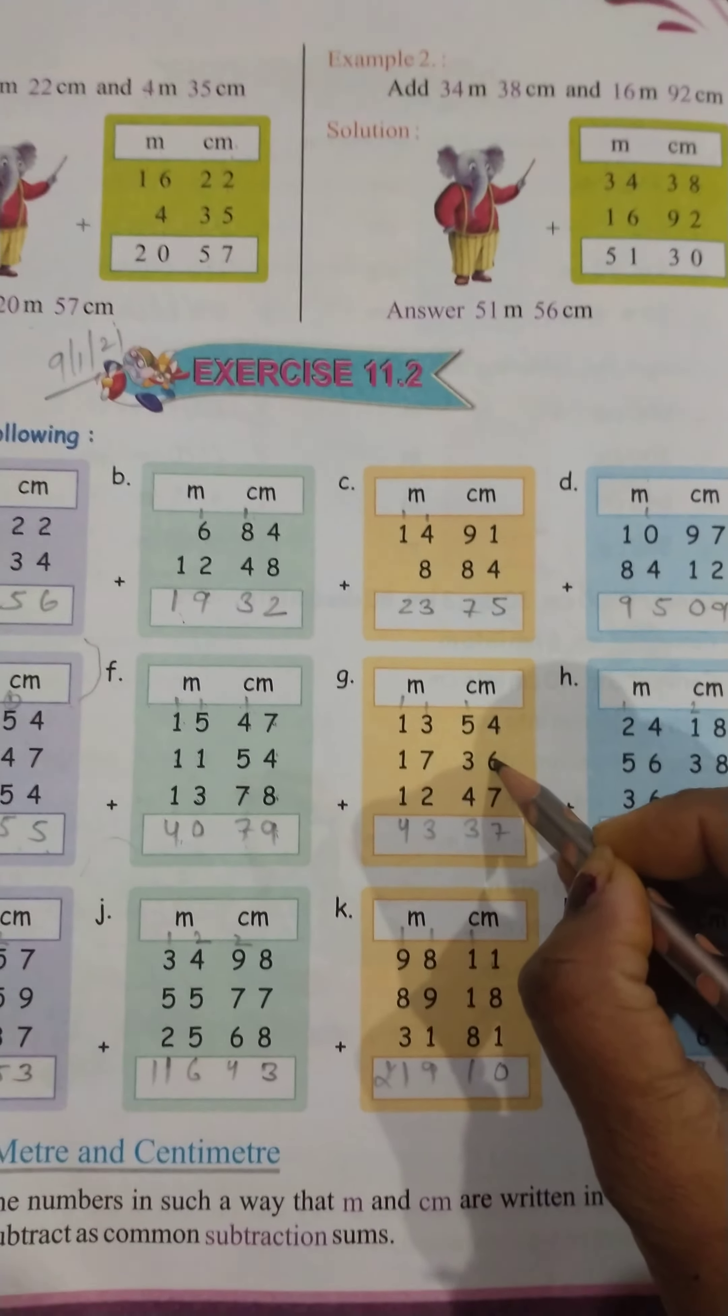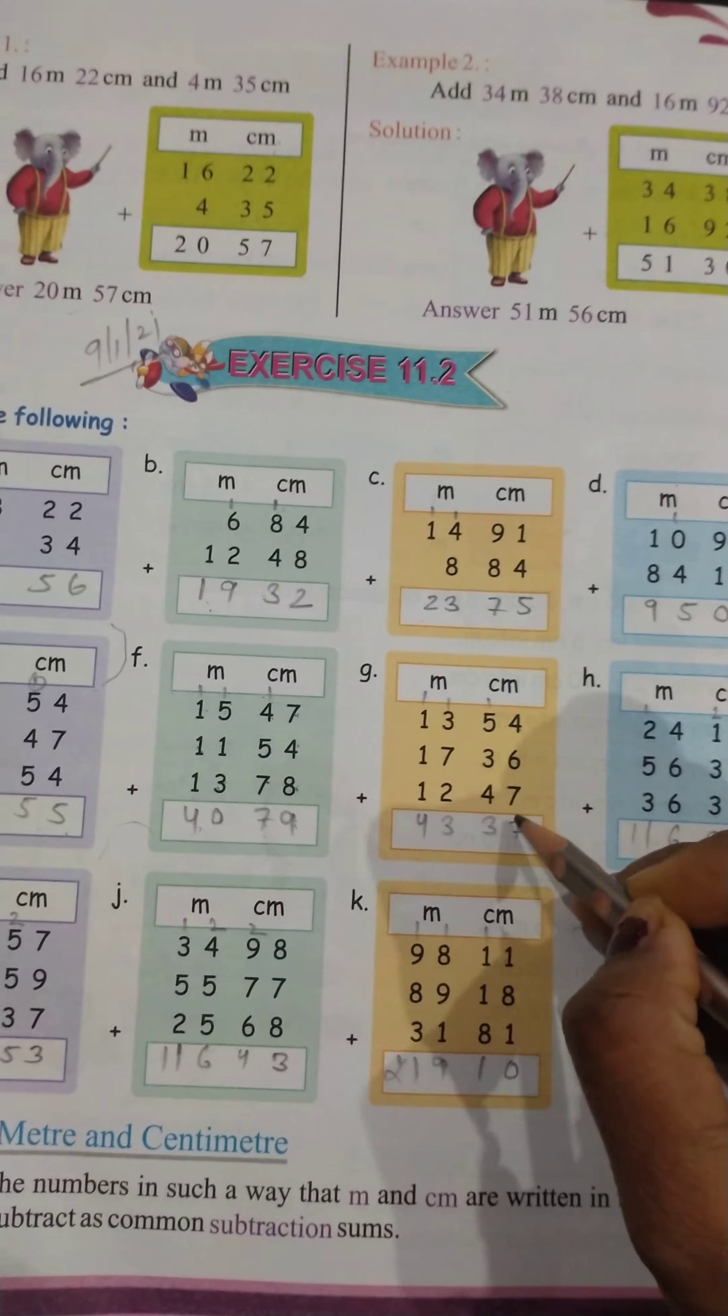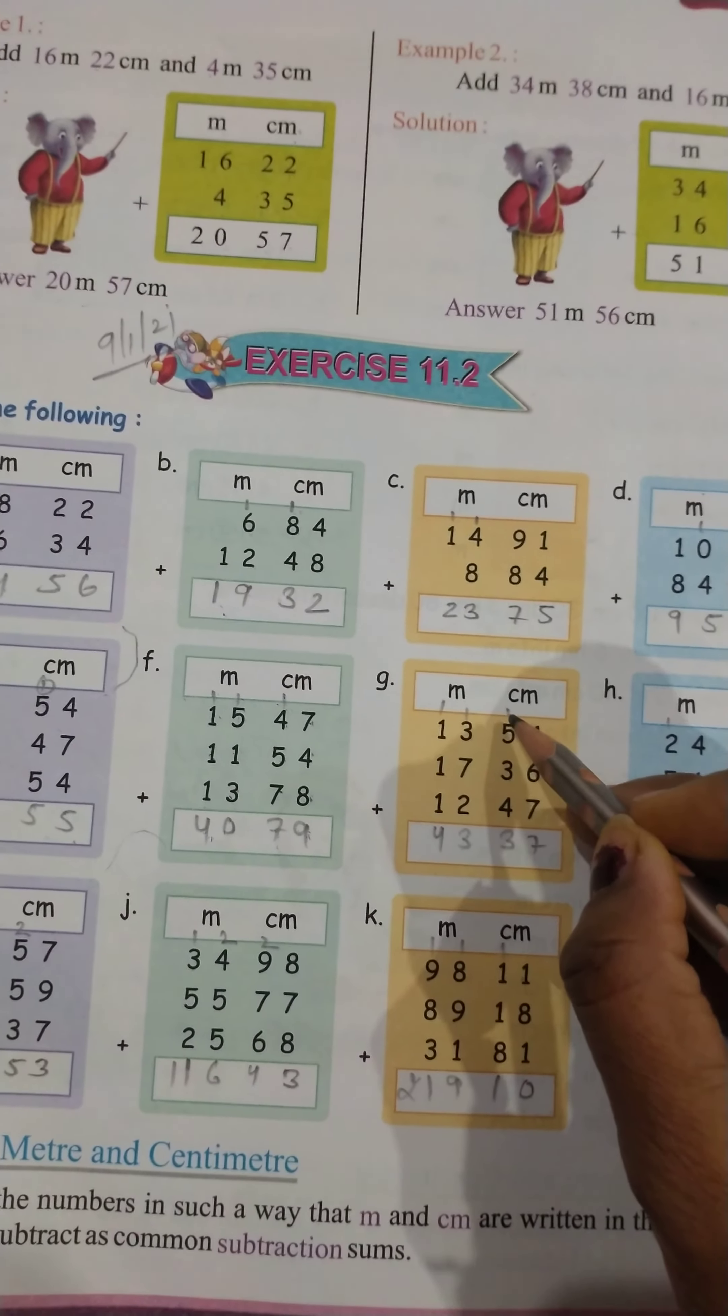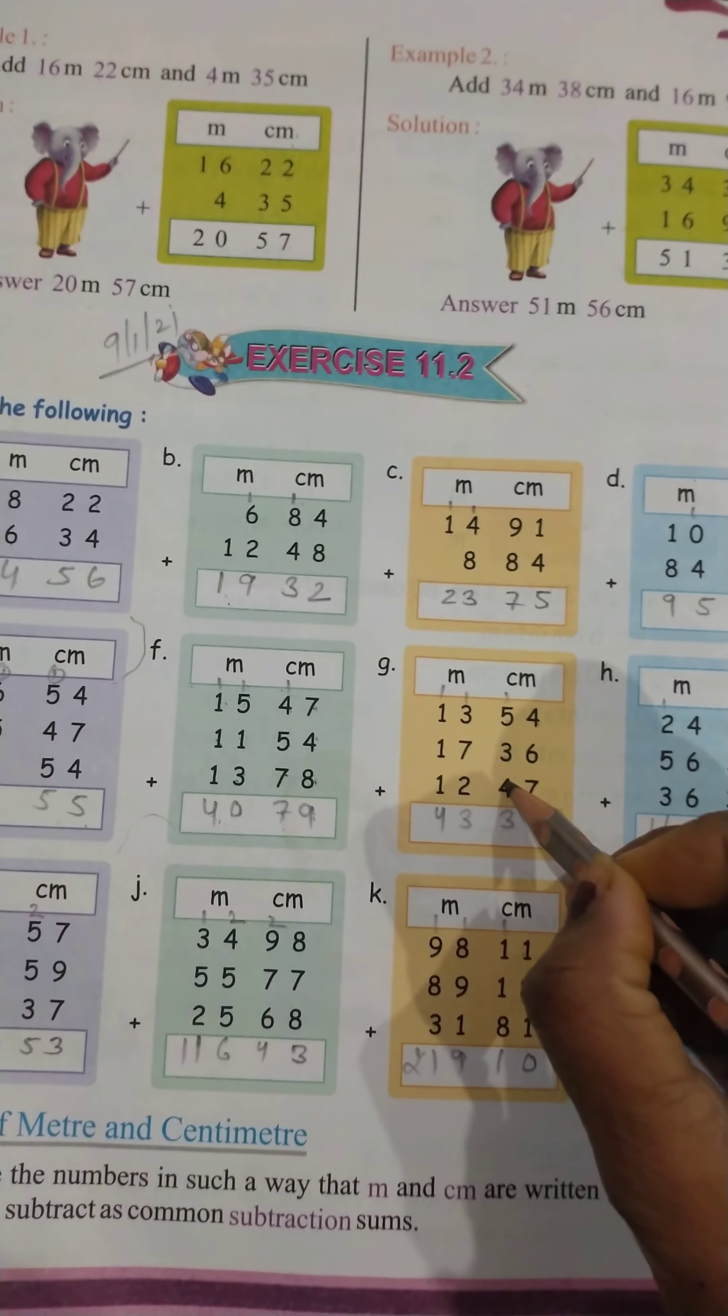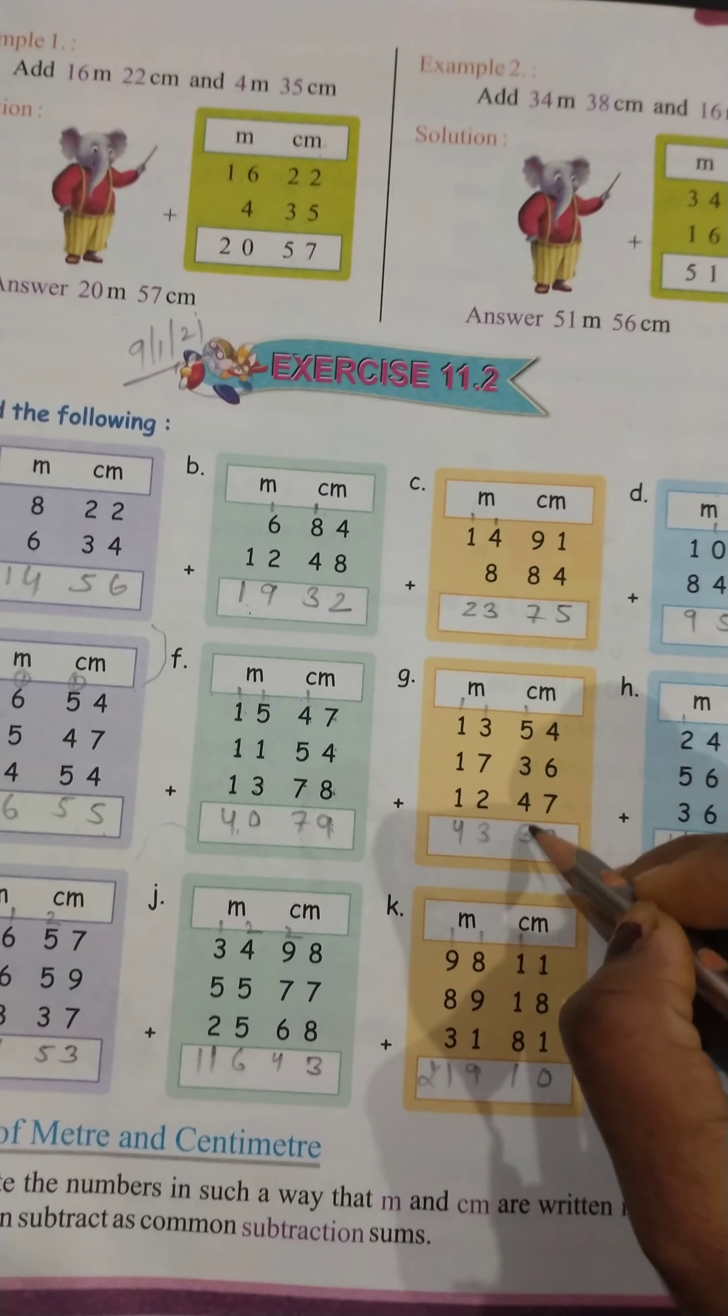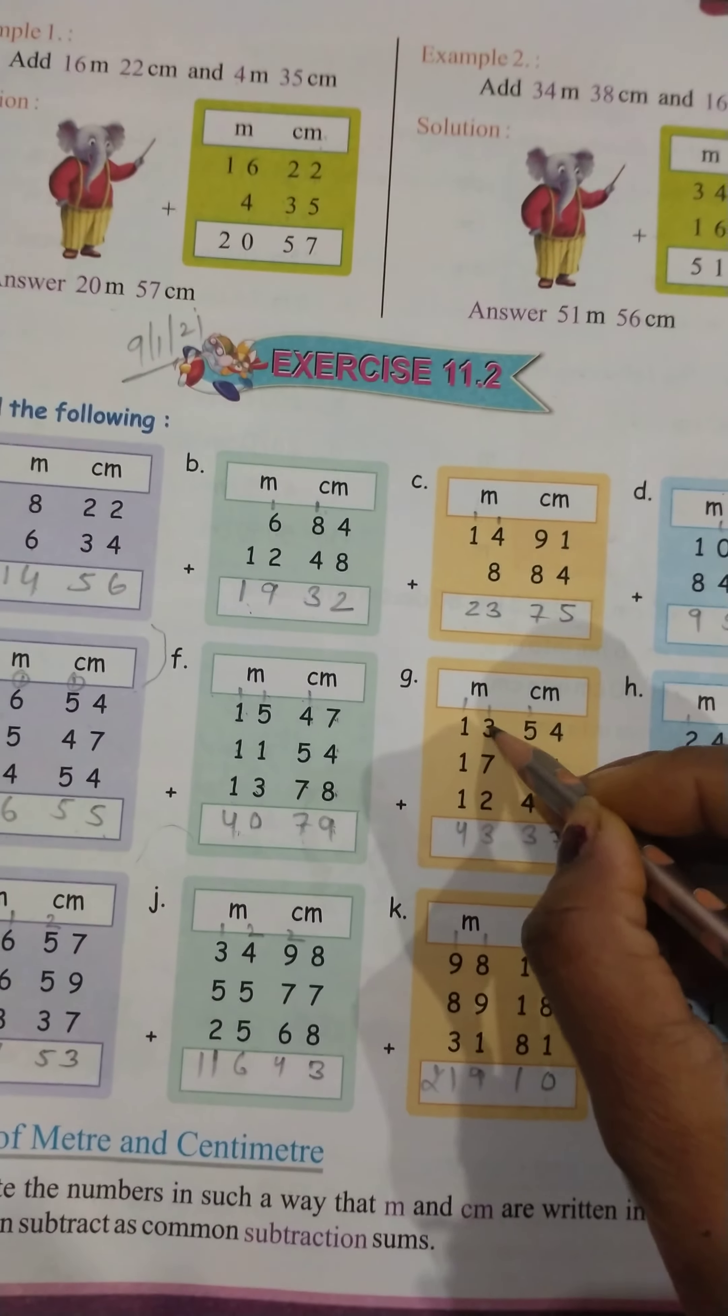4 plus 6 plus 10. 10 plus 7 is equal to 17. 17 come 1 carry. 5 plus 3, 8. 8 plus 4, 12 or 1, 13. 13 come 1 carry. 3 plus 7, 10.